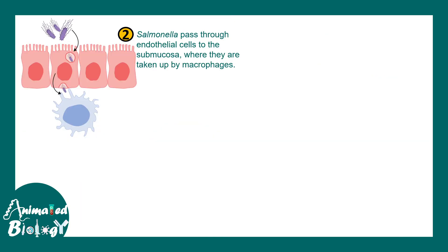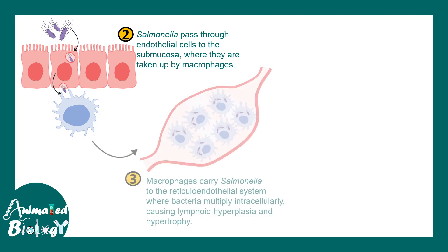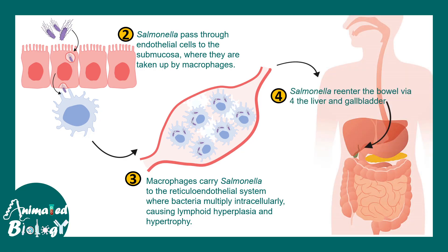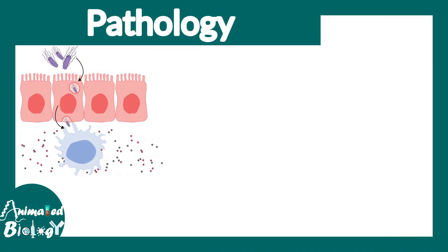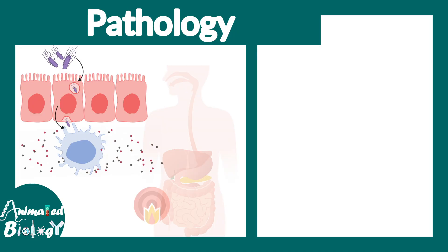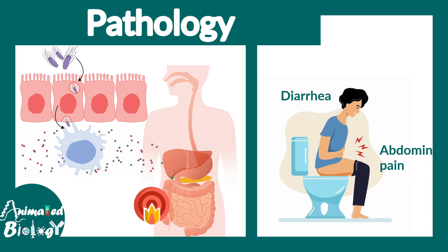Salmonella passes through the endothelial cells into the submucosa and is taken up by macrophages. These Salmonella bacteria can grow inside the macrophages as an intracellular pathogen, then ultimately reach the reticuloendothelial system where they can multiply and form lymphoid hyperplasia or hypertrophy. Salmonella can also re-enter the bowel via the liver or gallbladder, amplifying the overall infection. Additionally, macrophages engulfing Salmonella give rise to pro-inflammatory cytokines, creating intestinal inflammation leading to diarrhea and abdominal cramp-like symptoms.